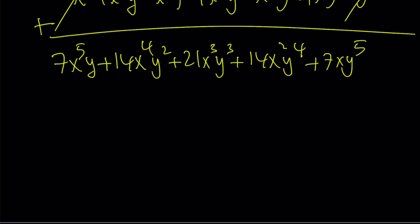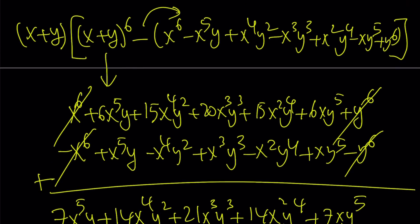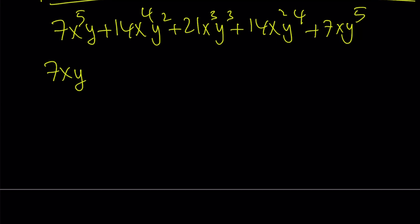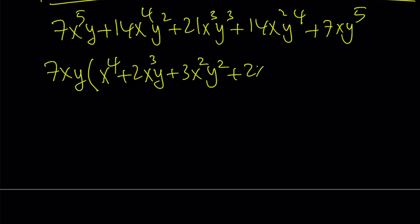Obviously, we can factor out a 7xy here. And don't forget, we still have an x plus y as one of the factors, but we're going to add that later. So 7xy, if you factor that out, you're going to get x to the 4th power, plus 2x cubed y, plus 3x squared y squared, plus 2xy cubed, plus y to the 4th. Now, of course, we have an x plus y as well — we're going to add that at the end.